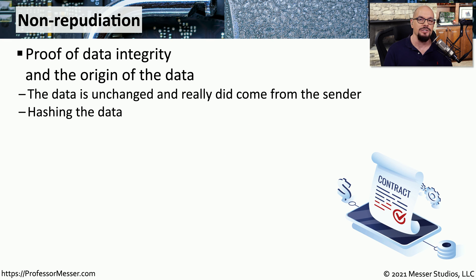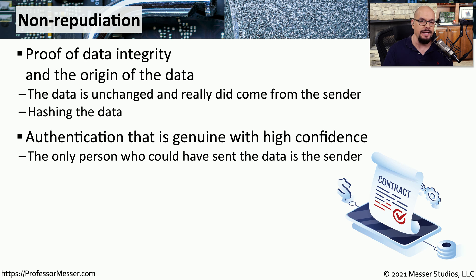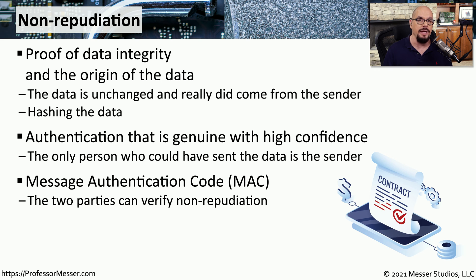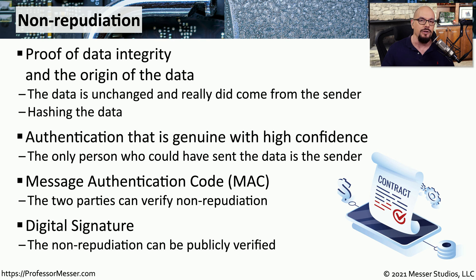Another important part of this process is knowing exactly who sent the data originally. If we can ensure that the information we've received is exactly what was sent and we can verify the person who sent it, then we have what's called non-repudiation. With non-repudiation, we have high confidence of exactly who sent that information, meaning only that original sender could have sent it. There are commonly two ways to provide non-repudiation. One is with a message authentication code or MAC, where the two communicating parties are the ones who can verify non-repudiation. This is different from a digital signature, where anyone with access to the sender's public key can verify that they sent it — a much broader form of non-repudiation.